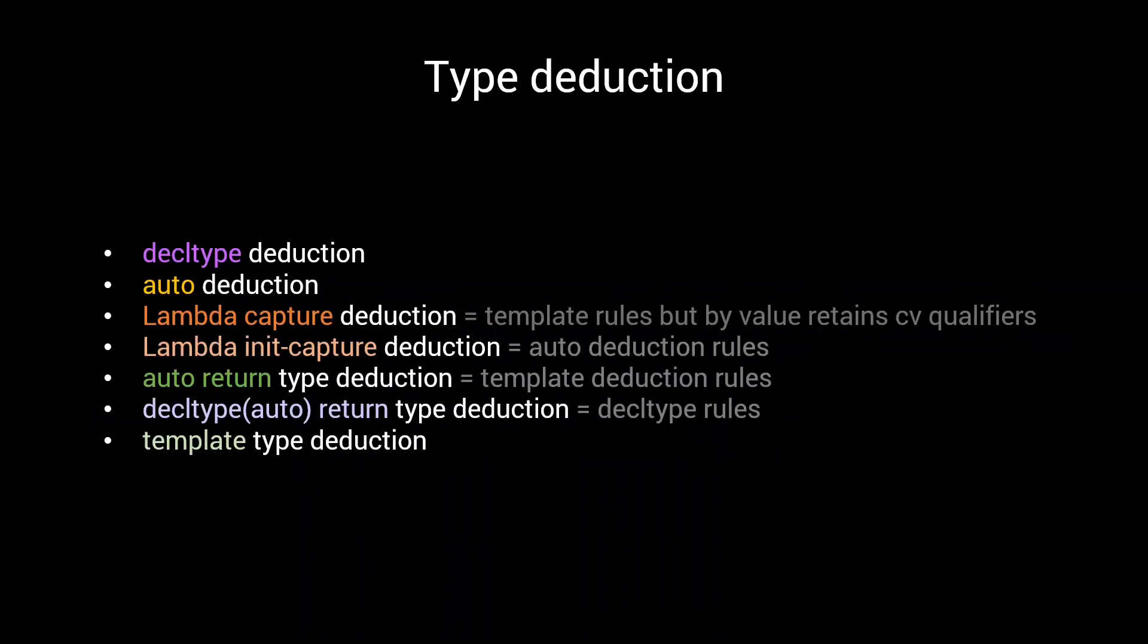At this point we have already discussed seven situations in which type deduction occurs. We talked about decltype deduction, we talked about auto deduction, lambda capture and lambda init capture deduction, two forms of return type deduction, and of course, template type deduction. Even though there is some overlap between these different rules, it is quite easy to lose track and wonder if type is deduced for a certain parameter when writing a highly generic library. So if you want to make sure you didn't make any mistakes in applying these rules, and just want to output the deduced type to verify this, how can you do this?